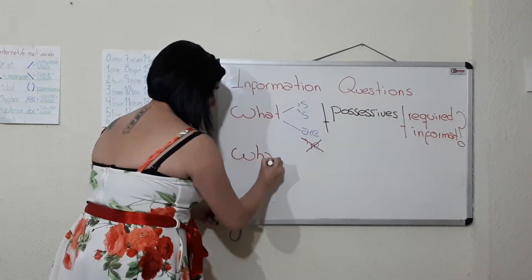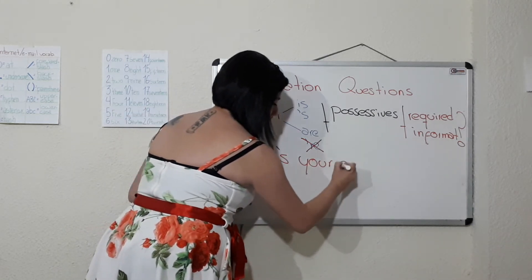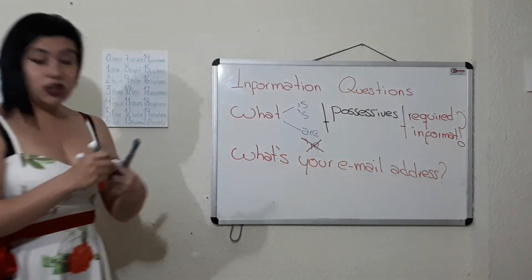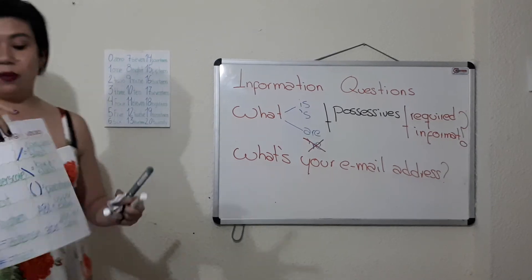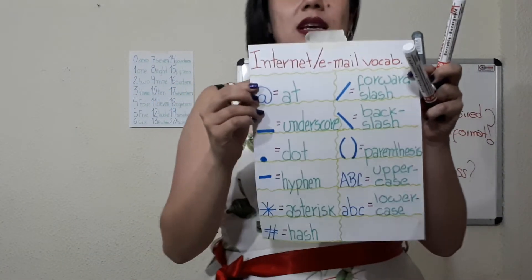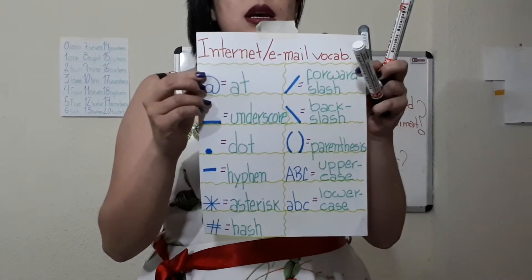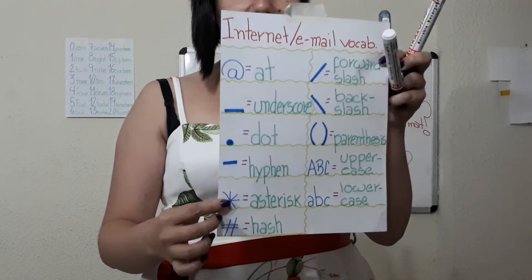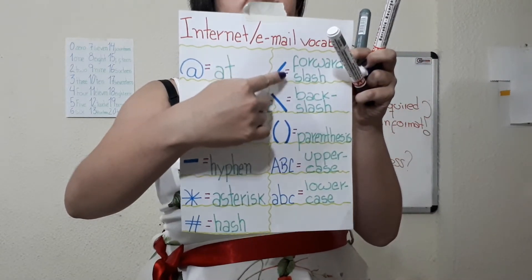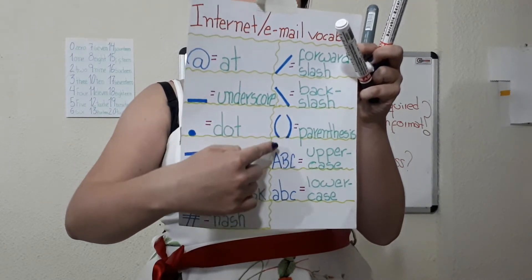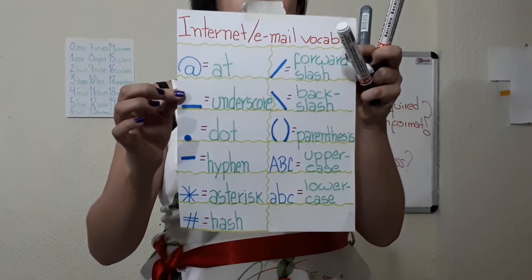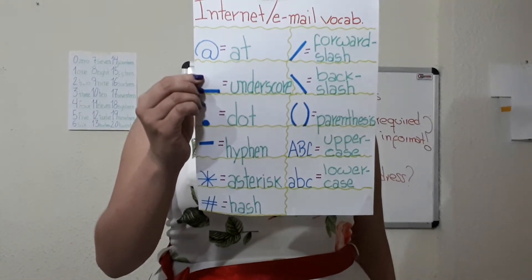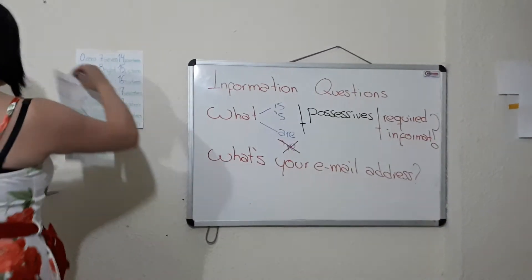Now something super important: 'What's your email address?' When talking about email addresses, there is extra vocabulary you need to know: at (@), underscore (_), dot (.), hyphen (-), asterisk (*), hash (#), forward slash (/), back slash (\), parenthesis, uppercase, and lowercase. That is the vocabulary you need for email addresses and internet vocabulary.